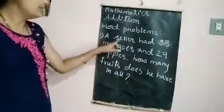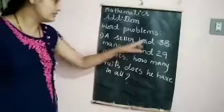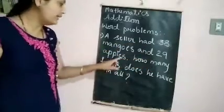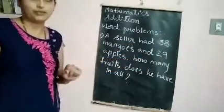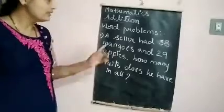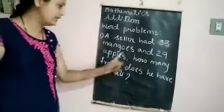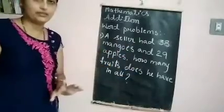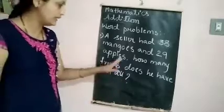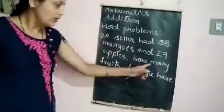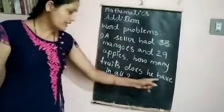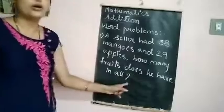A seller had 38 mangoes and 29 apples. How many fruits does he have in all?